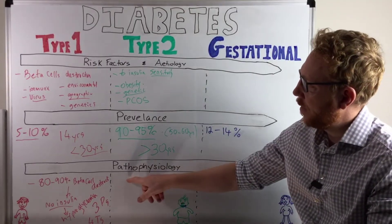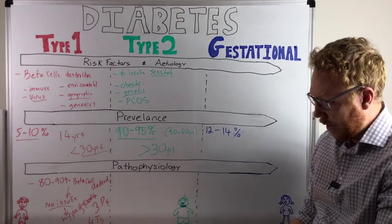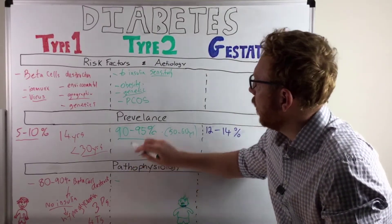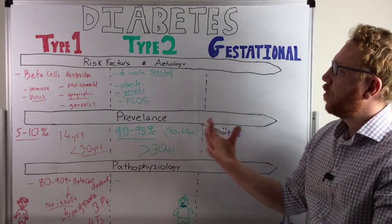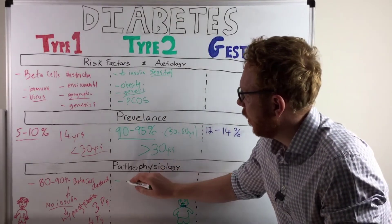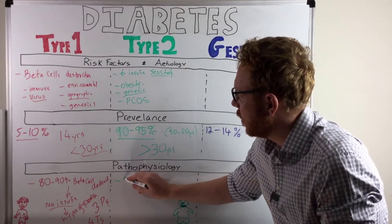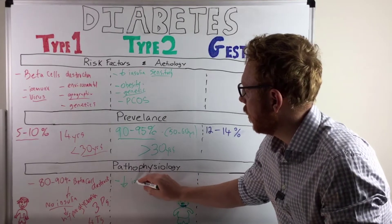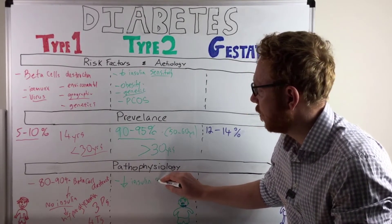So how is this pathophysiology a bit different to here? Well, it seems that the genetics, so it's a background of a genetic predisposition, and then you start with the obesity, you have a decrease in insulin sensitivity at the tissue level.